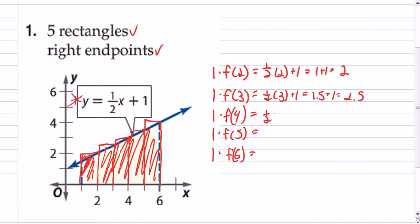Same thing for f of four. Plug it in, you get two plus one equal to three. It's kind of easy to do the rest of these because you see a pattern where it's just 0.5 higher than the last time. So it's going to be 2.5 plus one, which is equal to 3.5.